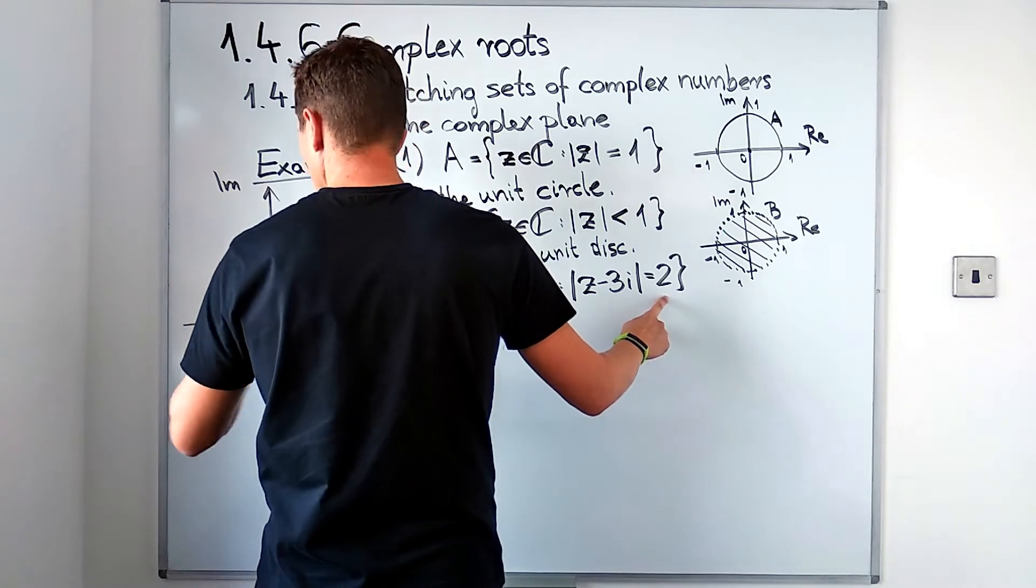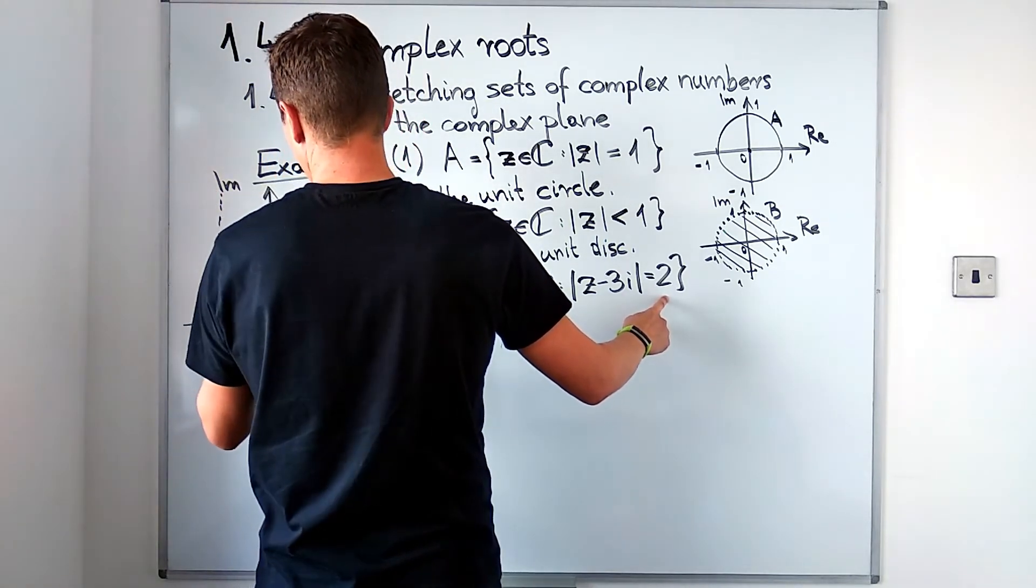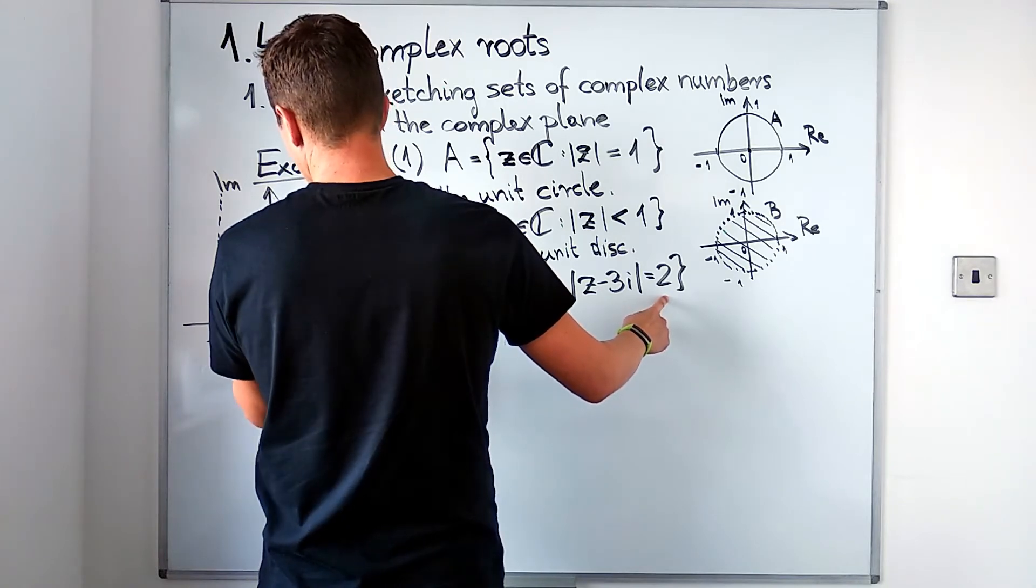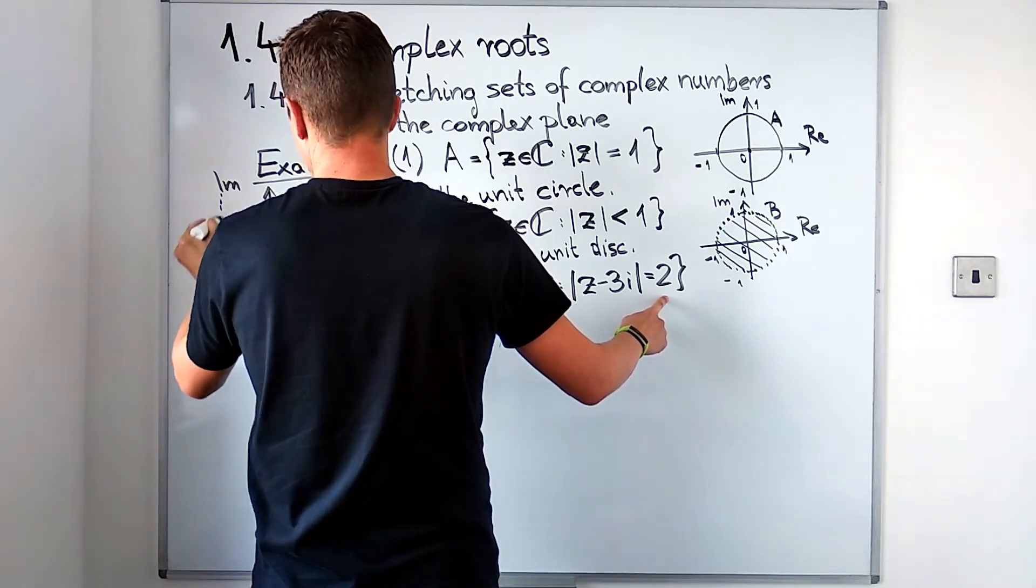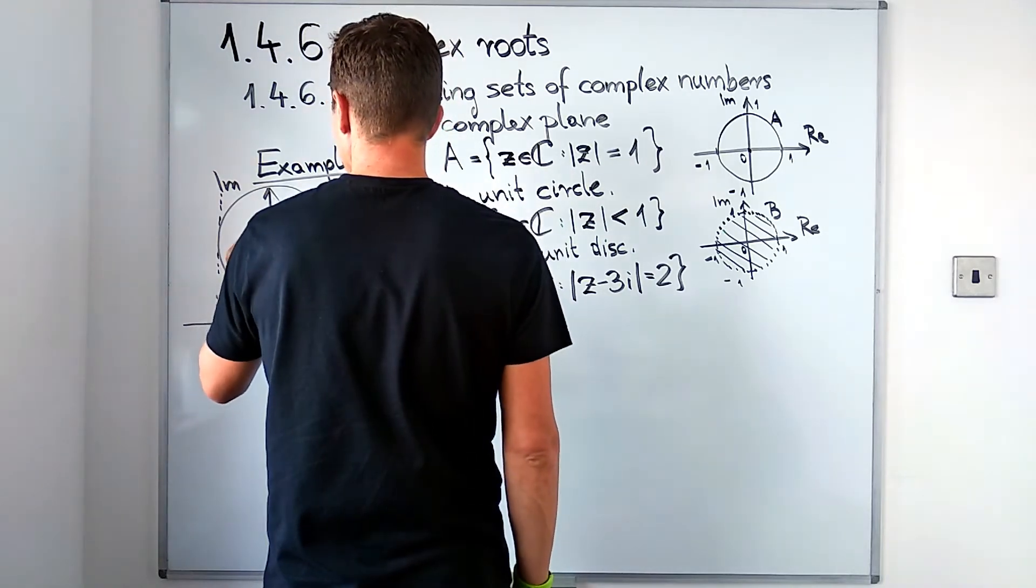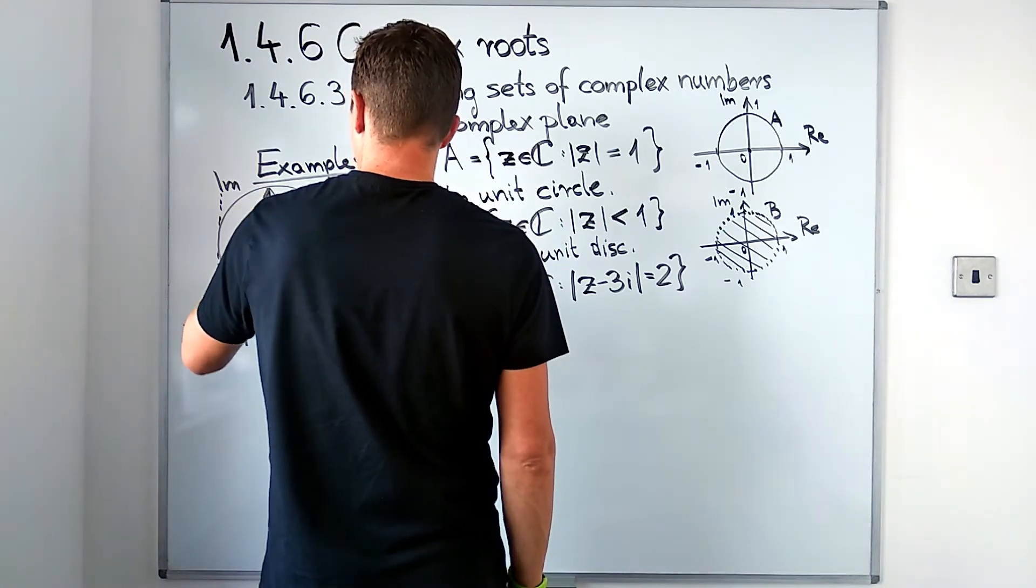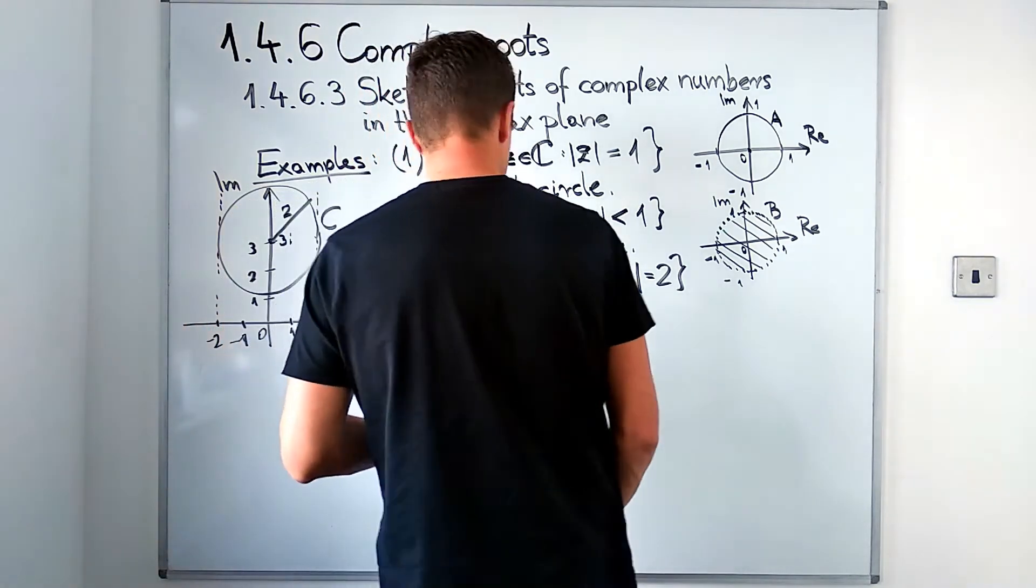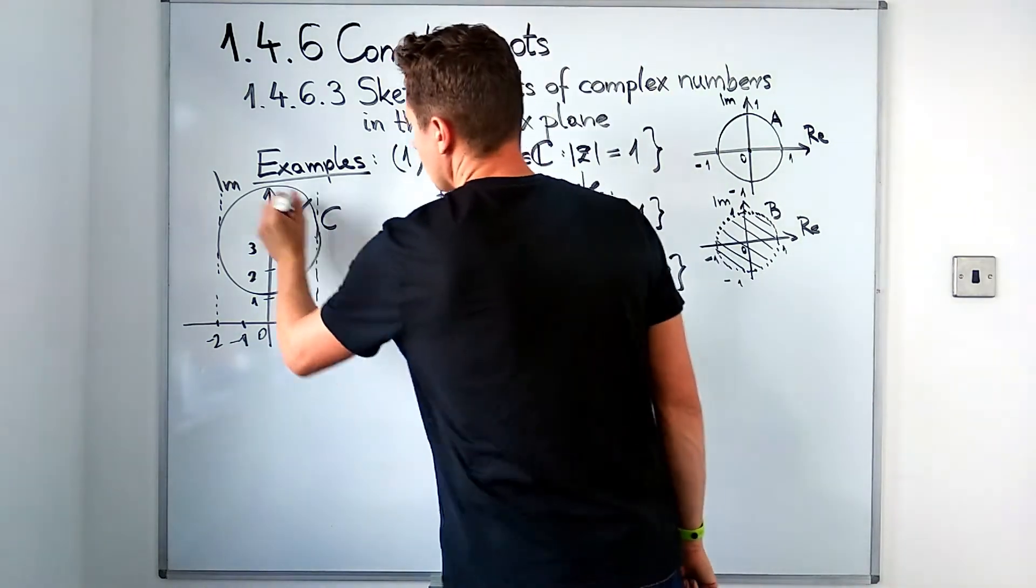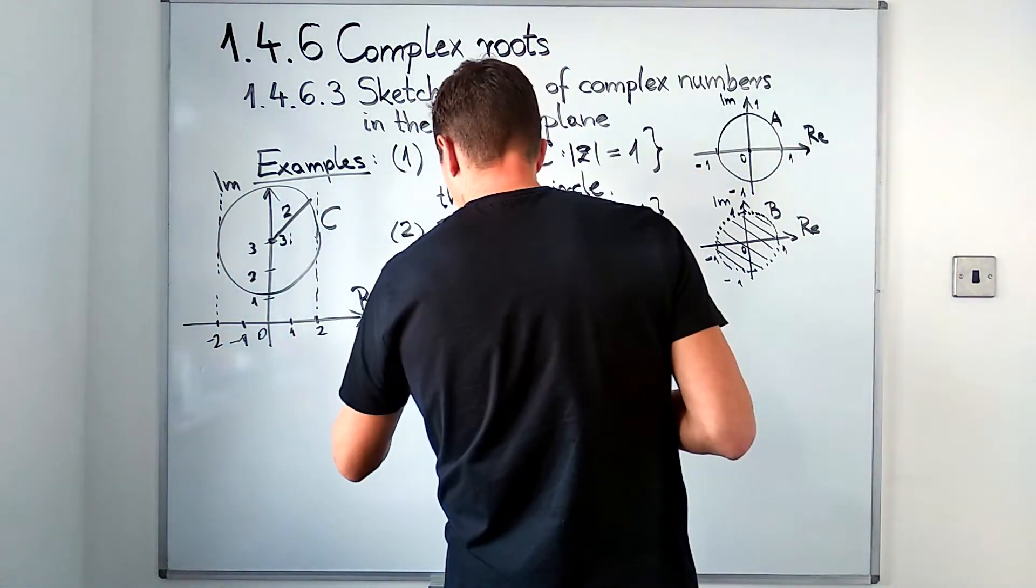What I need to do is draw a circle around it which has radius 2. So let me just draw some auxiliary lines. What I have to have is this circle around 3i, centered at 3i with radius 2. This circle is going to be our set C. Points along the circle satisfy this relation.